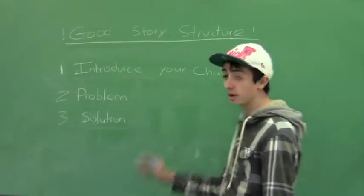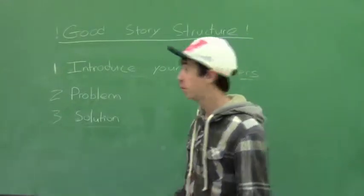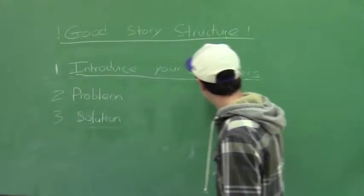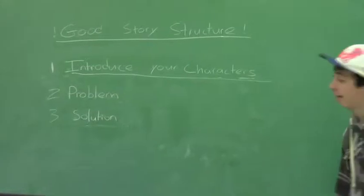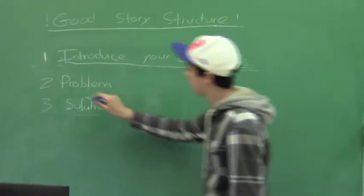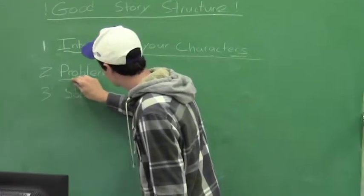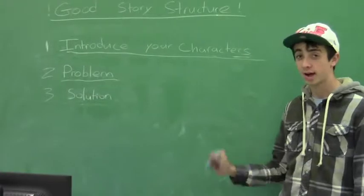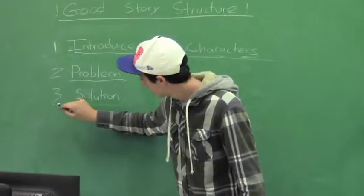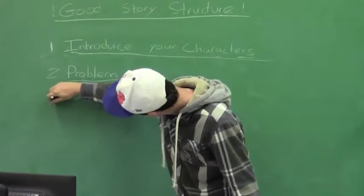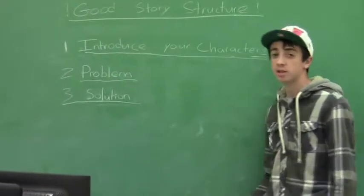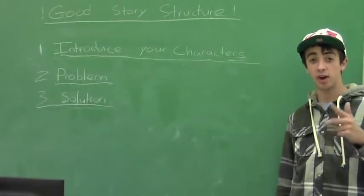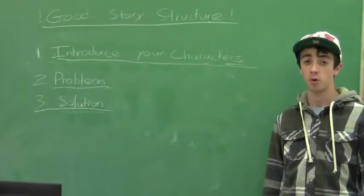Hey kids, in order to have a good movie, you need to develop a good story. First, you want to introduce your characters. After you introduce your characters, you need to create a problem between those characters — that's your conflict. After that, you need a solution to that problem to end your story. Beginning, middle, and end is also important.